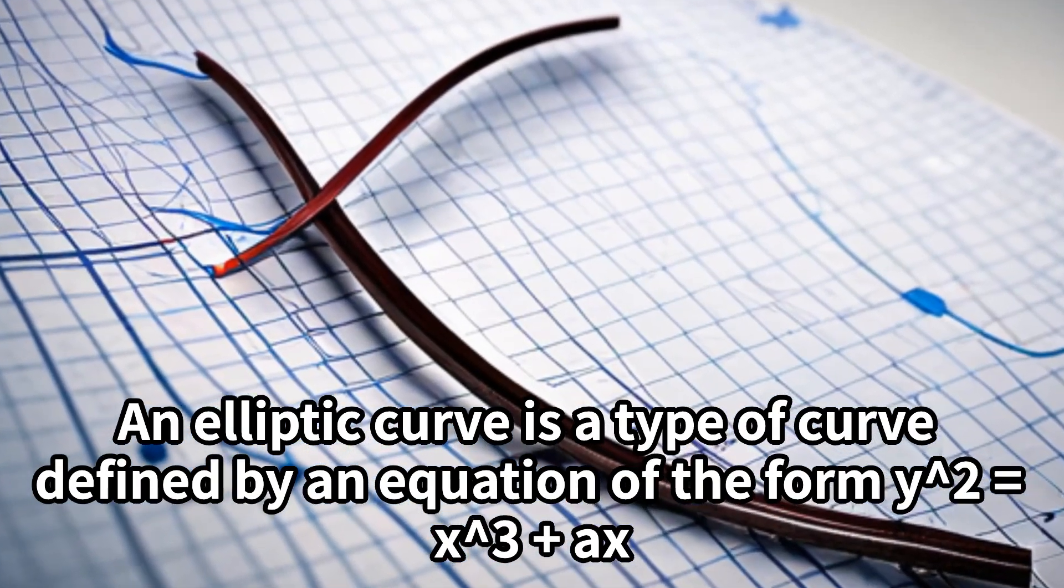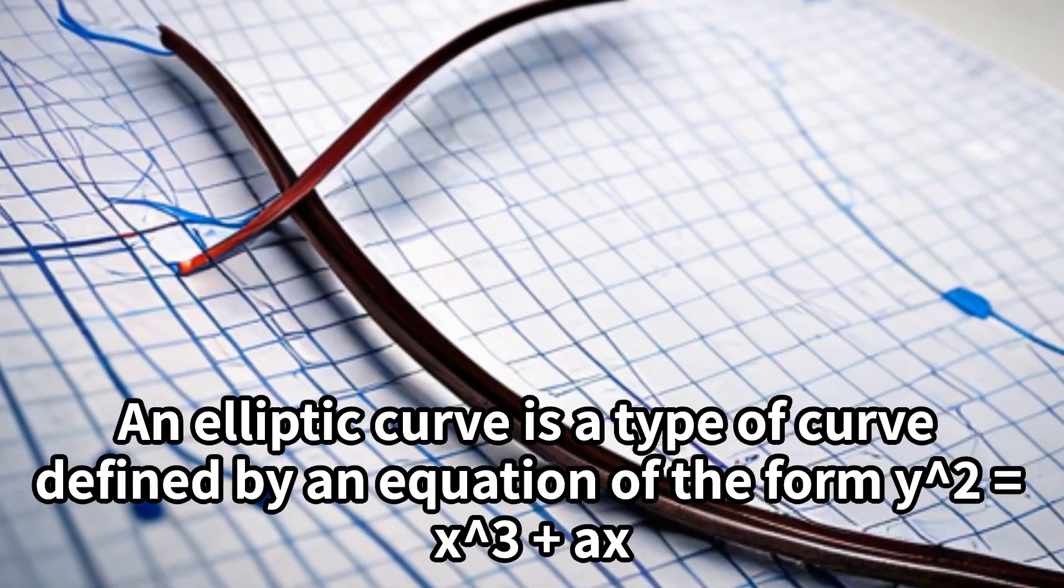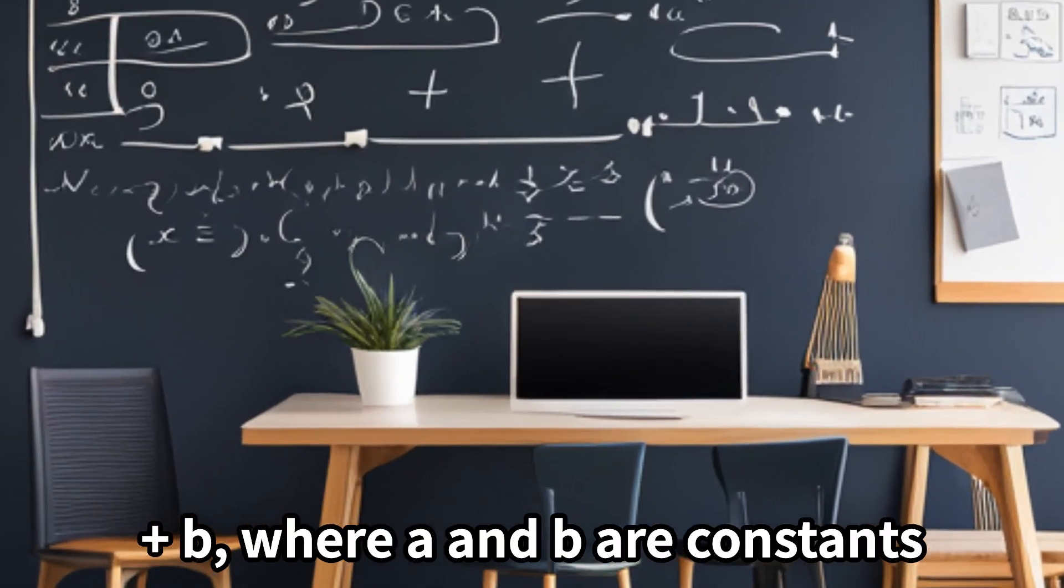An elliptic curve is a type of curve defined by an equation of the form y² = x³ + ax + b, where a and b are constants.